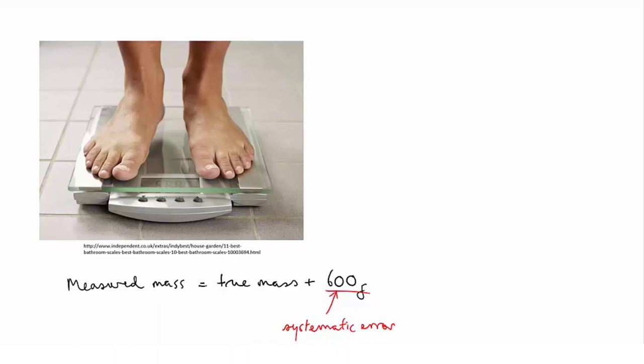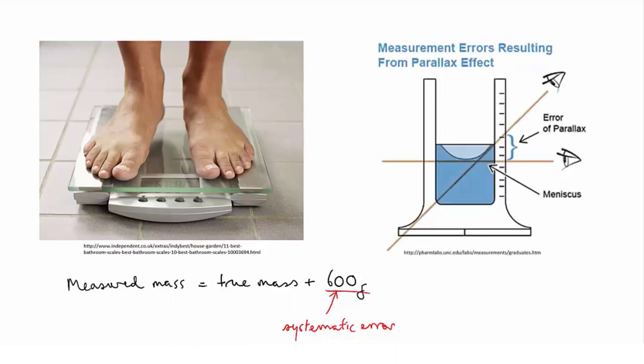Another example would be, say you were reading the meniscus of a liquid in a measuring cylinder, and you were unwittingly but consistently holding your head a little above the meniscus. If you do this, the meniscus appears to line up with gradations that are higher than the true value. This particular kind of error, arising from your eyes not being level with the meniscus, is called parallax error.